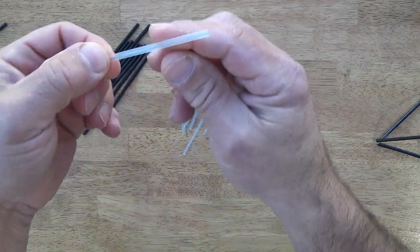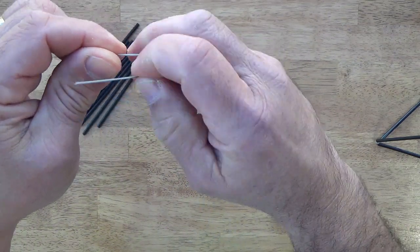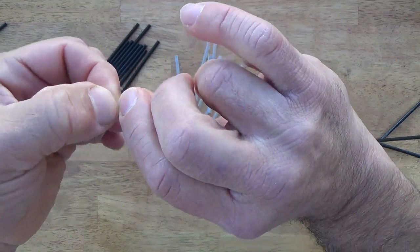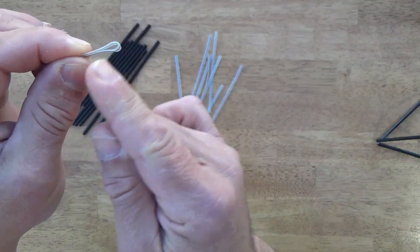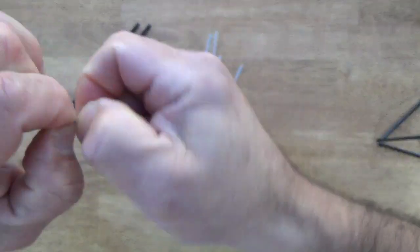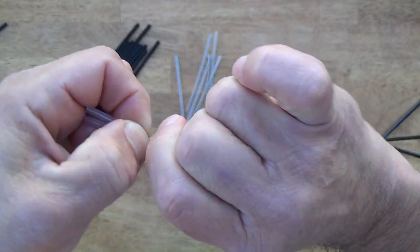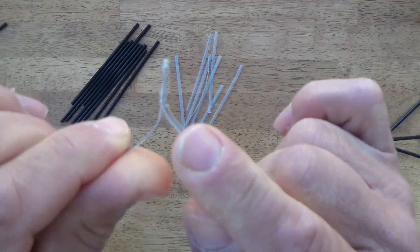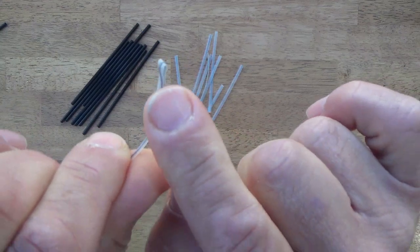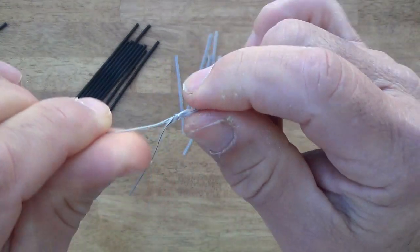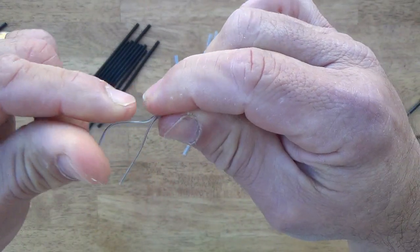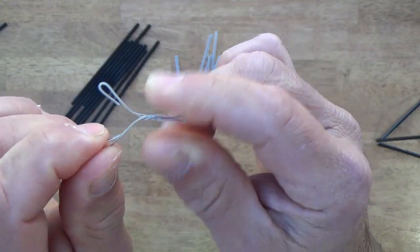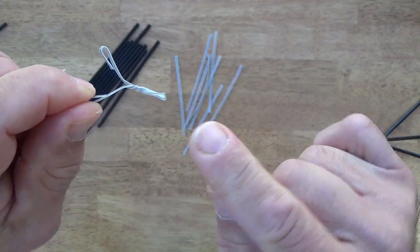You simply take one of the twist ties, fold it in half, and then about a third of the way from that bent end, put a good couple of twists in there nice and tight. And then these two loose ends you just fold over.